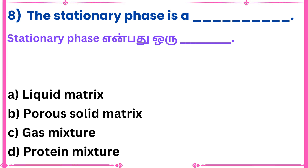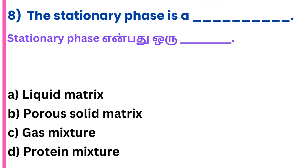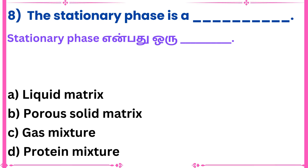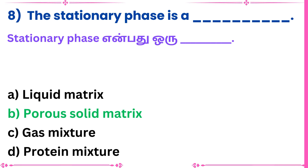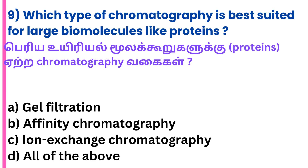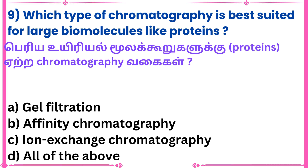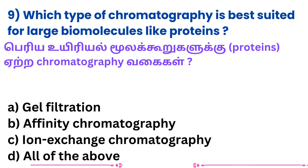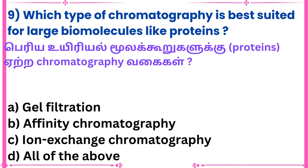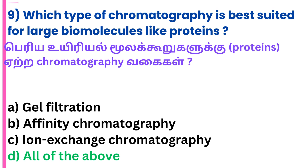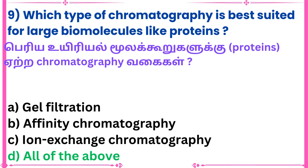Eighth question: The stationary phase is here — dash. Answer: Porous solid matrix. Ninth question: Which type of chromatography is best suited for large biomolecules like proteins? Answer: All of the above.